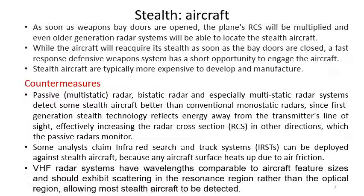Countermeasures include passive radars, bi-static radars, and especially multi-static radar systems, which can detect some stealth aircraft better than conventional monostatic radars. First-generation stealth technology reflects energy away from the transmitter's line of sight, effectively increasing the radar cross section in other directions, which passive radars can monitor.